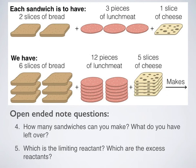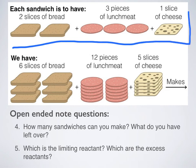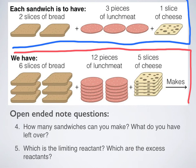Let's try another question. Each sandwich needs to have the following. So this is my chemical reaction: two slices of bread, three pieces of lunch meat, one slice of cheese. What am I giving you? I'm giving you this. I'm giving you six slices of bread, twelve pieces of meat, five slices of cheese.